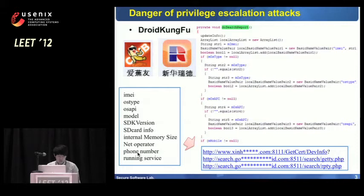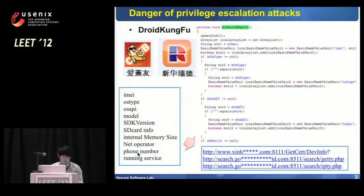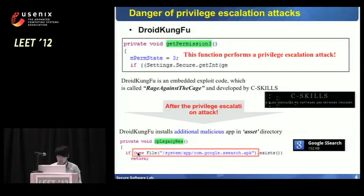To introduce the magnitude of privilege escalation attacks, I will show malicious code that actually performs such attacks. Droid Kung Fu is one of the Android malicious codes that attacks a system using privilege escalation. It extracts machine information from a user terminal, including IMEI, OS type, OS API, etc., and transfers this information to an attacker's server to identify the corresponding terminal. The getPermission function is used to execute exploit code for the actual privilege escalation attack.